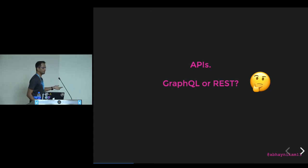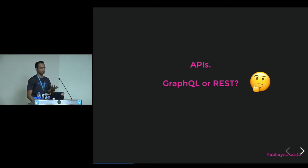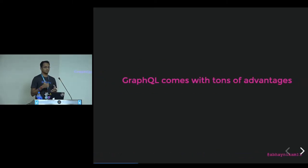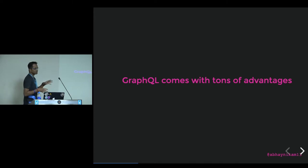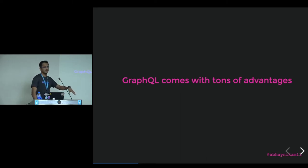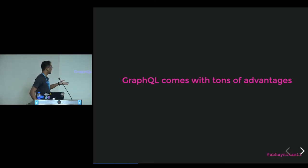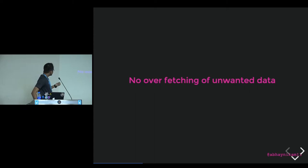There are a lot of articles and people who feel strongly about it. We'll look into why GraphQL was a good thing for us and how we could benefit from using it in NitroHelp. I've listed down some of the advantages — there are many more you can find on the internet. The first advantage was no overfetching of unwanted data. I'll explain this with an example.